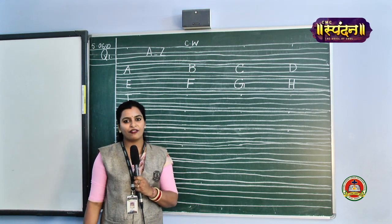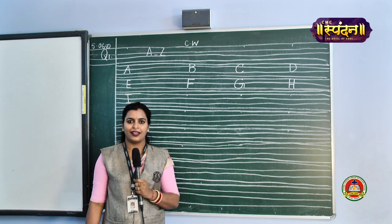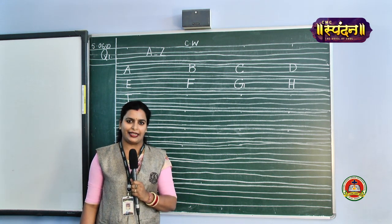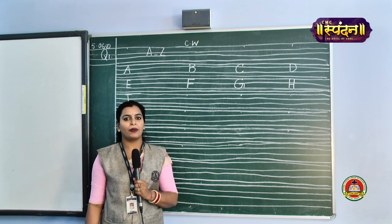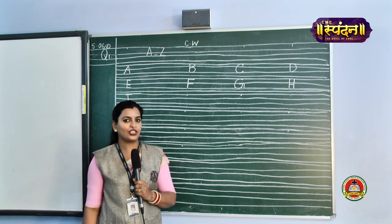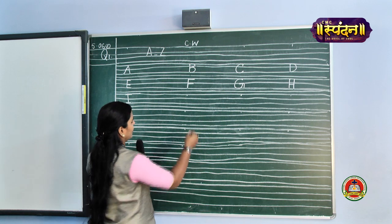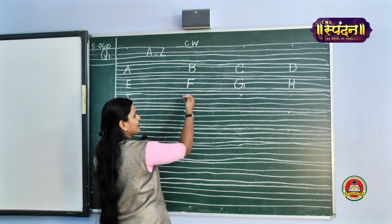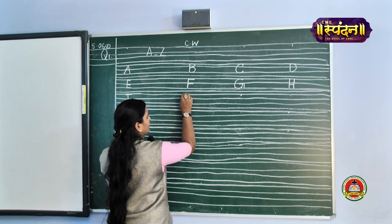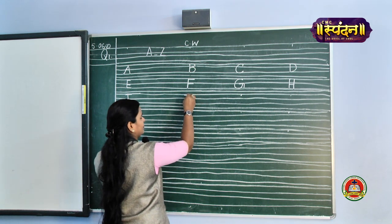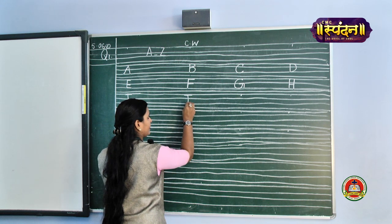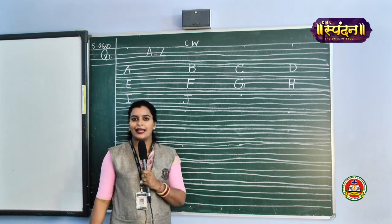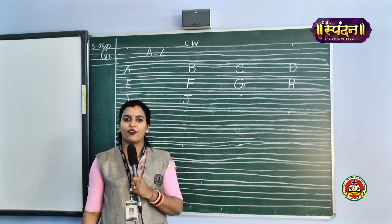What is the next alphabet? J. J for jug, J for joker. Come, let us write alphabet J. It will just come below alphabet F. Make a slanting line and then make a J. Next alphabet is K. K for kite, K for king, K for kangaroo.